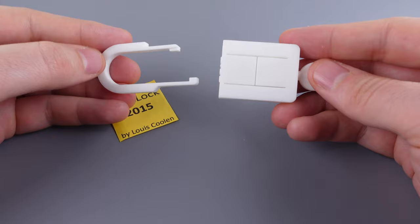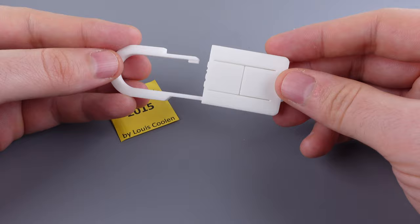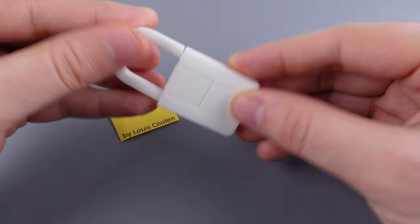To reassemble the puzzle just reverse the steps. We'll do a quick reassembly here, simply put the shackle back in. It snaps back into place on both sides.